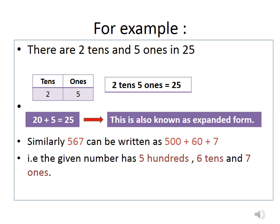For example, how 25 is written? In 25, 2 is known as 10's and 5 is known as 1's which can also be written as 20 plus 5 is equal to 25 which is also known as its expanded form.